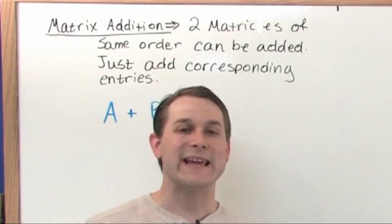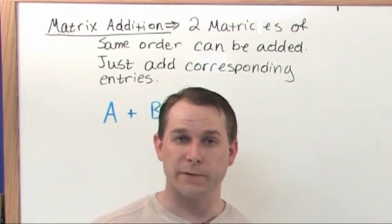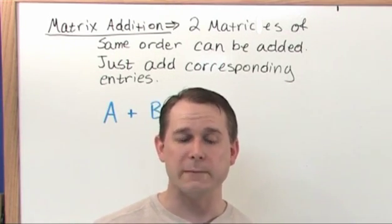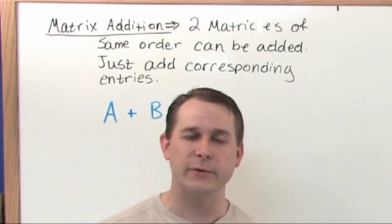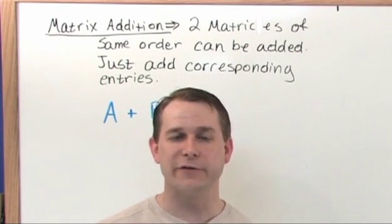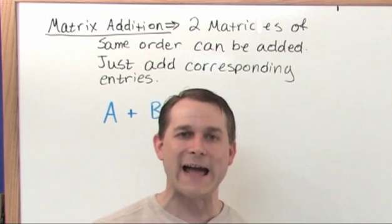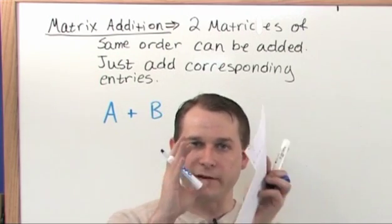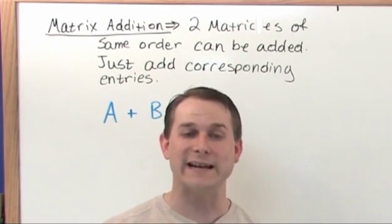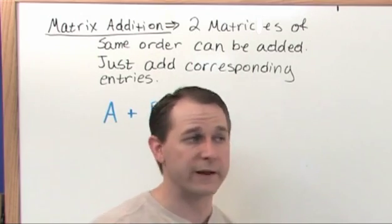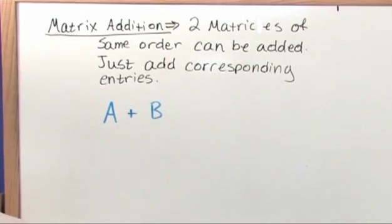Whereas before, from basic math, you can take any two numbers and add them, no problem. With matrices, not true. You cannot add a matrix of one size with a matrix of a different size. It does not exist. They have to have the same order.